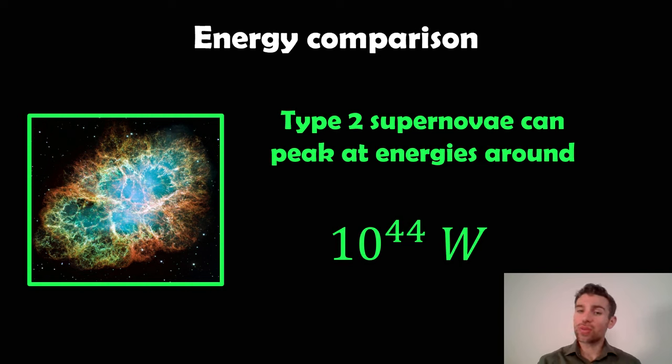Type 2s, these can range actually. Because a type 2 is the death of a massive star, massive stars can have a range of masses. The biggest ones are going to have the biggest energies, but they can peak with energies up to about 10 to the 44 watts. That's 10 with 44 zeros on. That is considerably more than a type 1a and a kilonova.